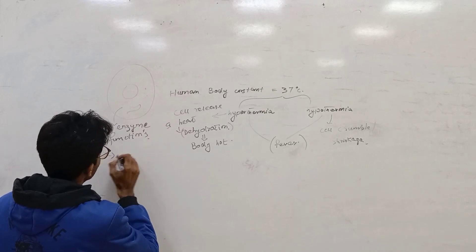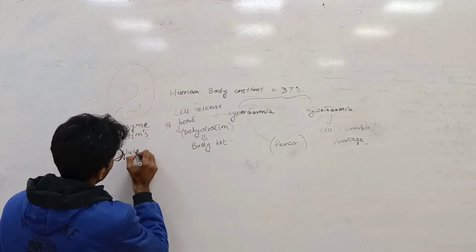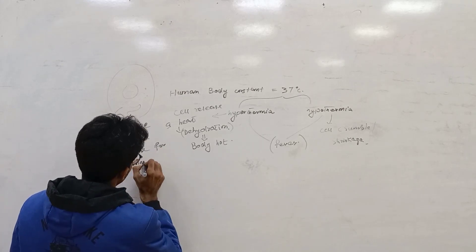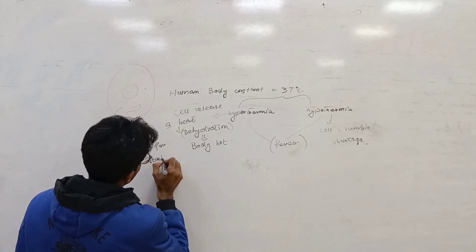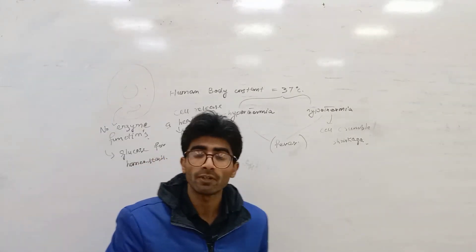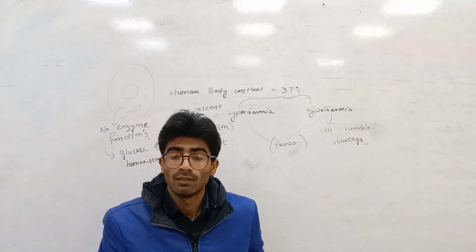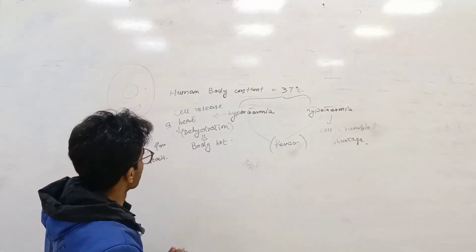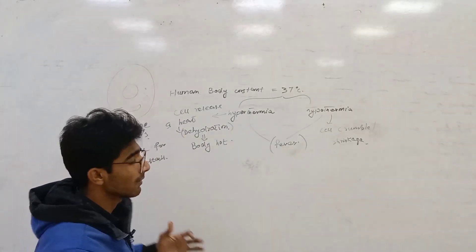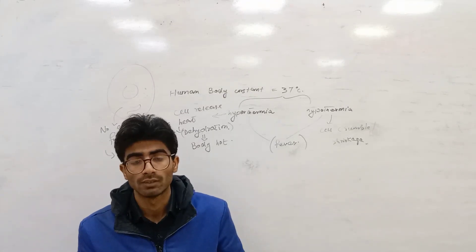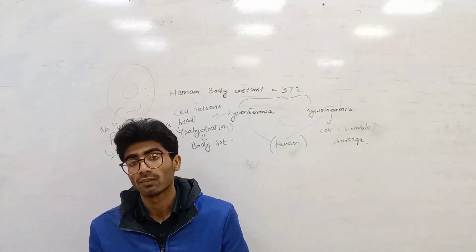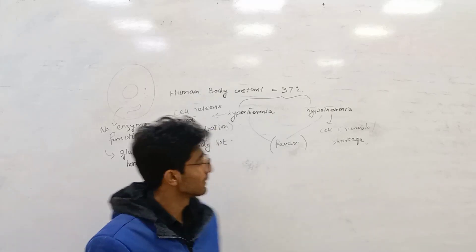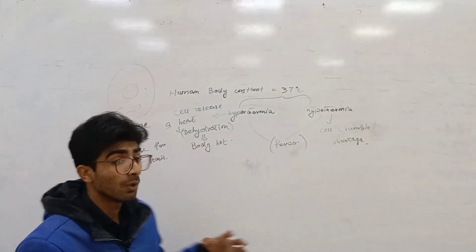We need glucose for homeostasis. Due to enzyme, there is no production of ATP, homeostasis mechanism disturbed. There are several effects on human body due to the increasing of temperature and due to the decreasing of temperature. Just take a concept here - what is homeostasis?